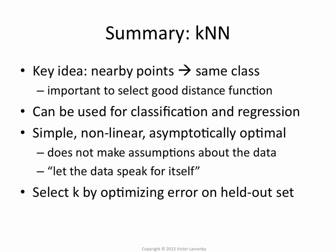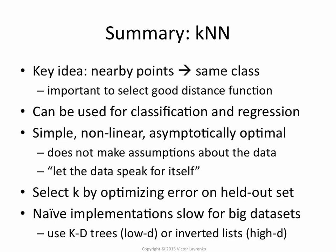You do need to select the distance function — we talked about different options. You also need to select k, the number of neighbors, and the way to do that is to use cross-validation: run it on the validation set and see which value does the best. If you do it naively it's very, very slow, but you can optimize it.